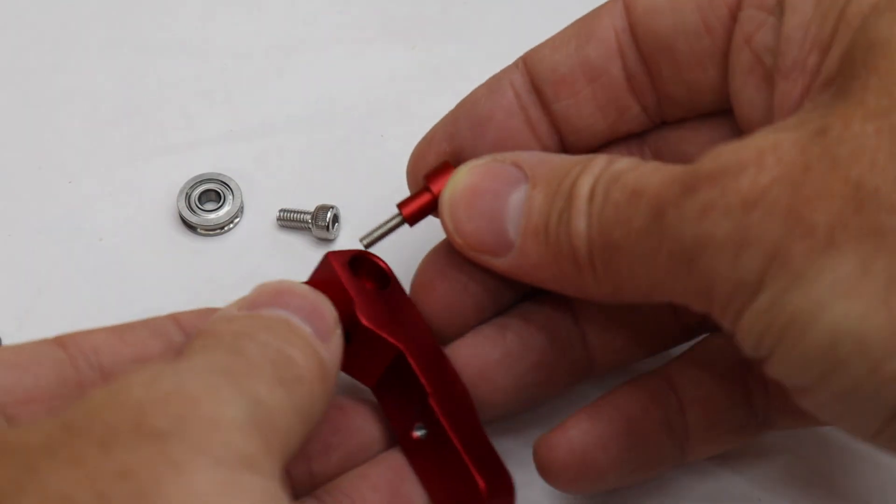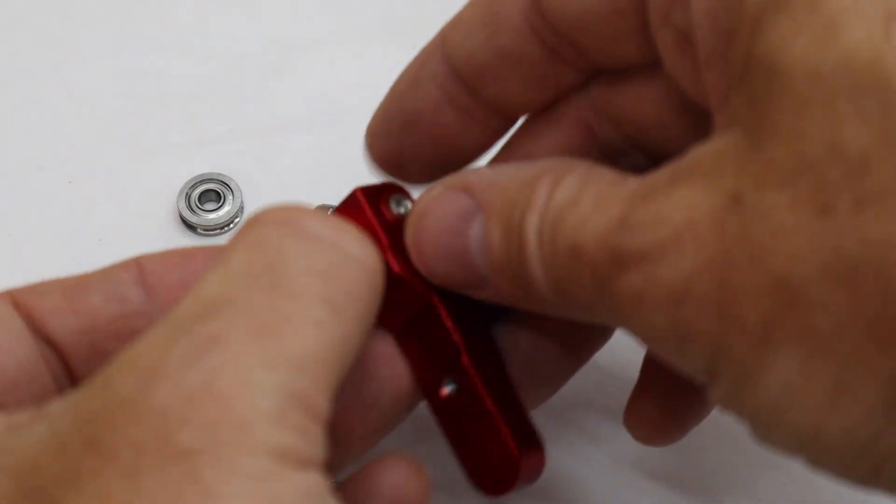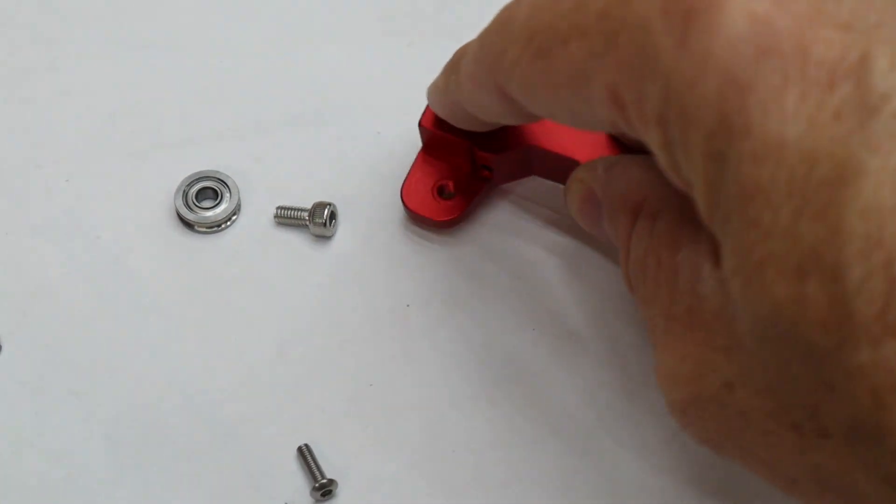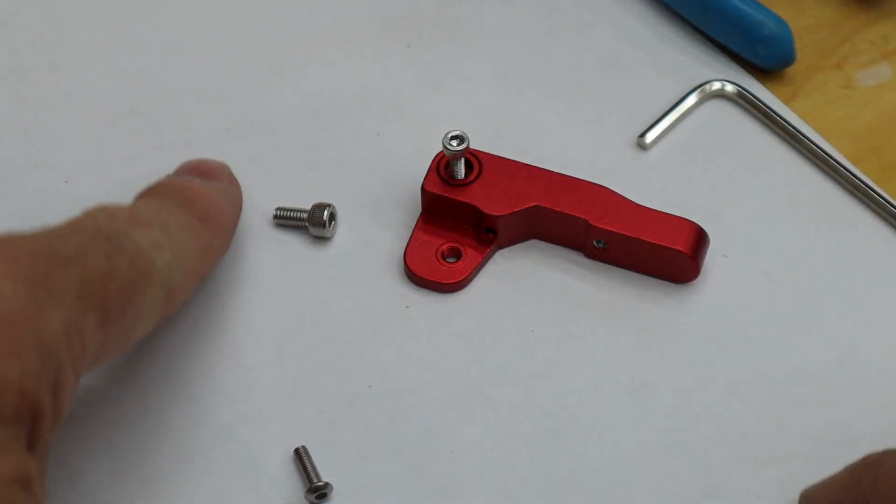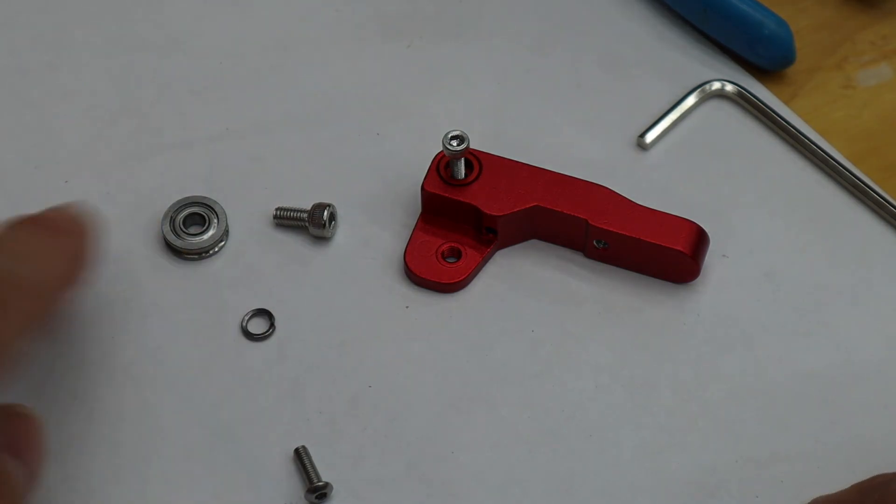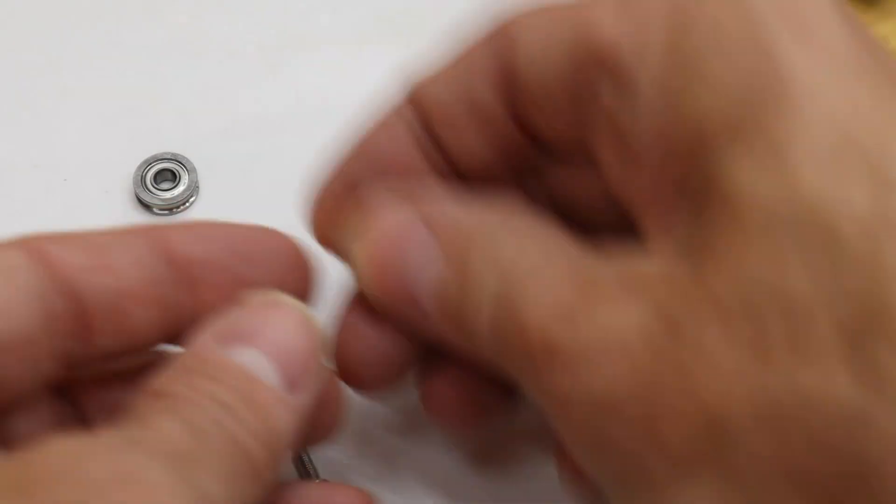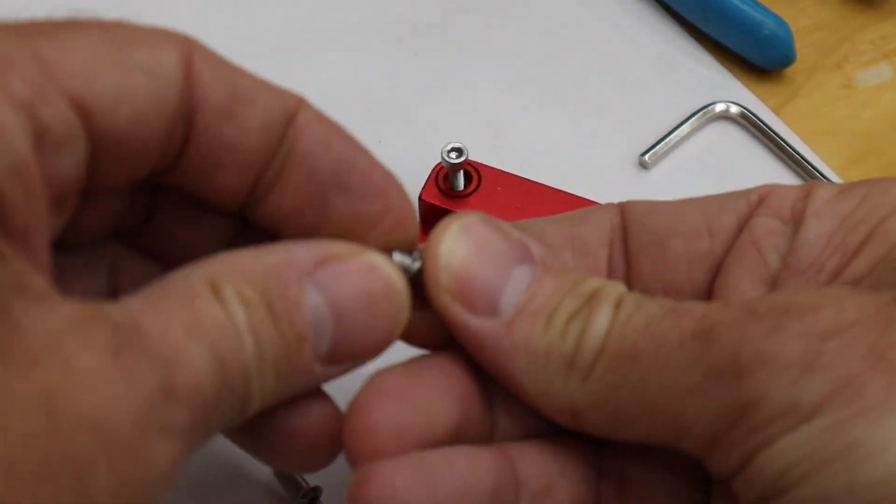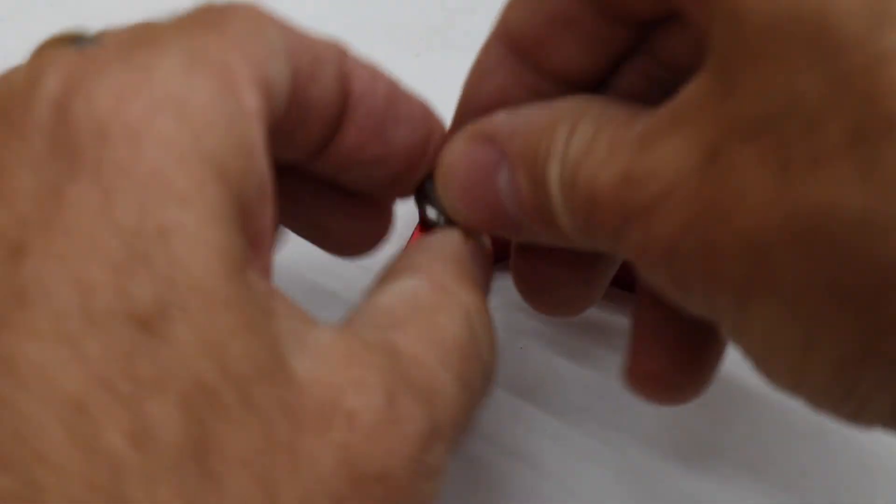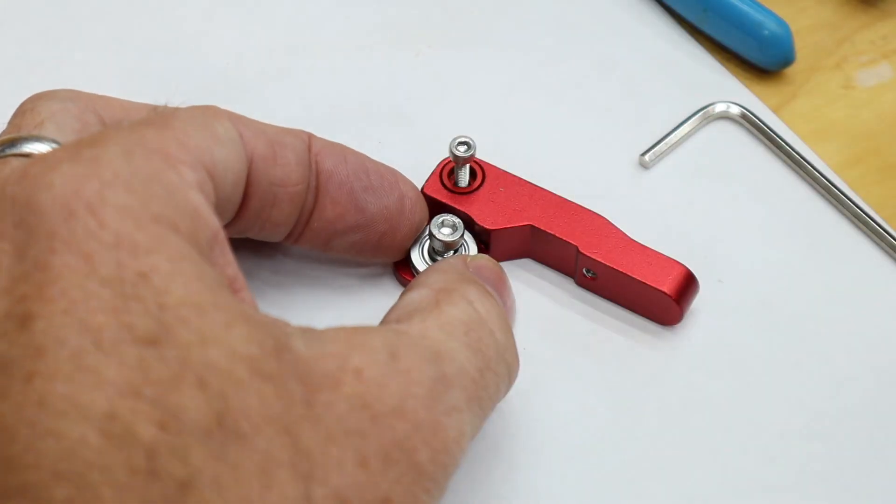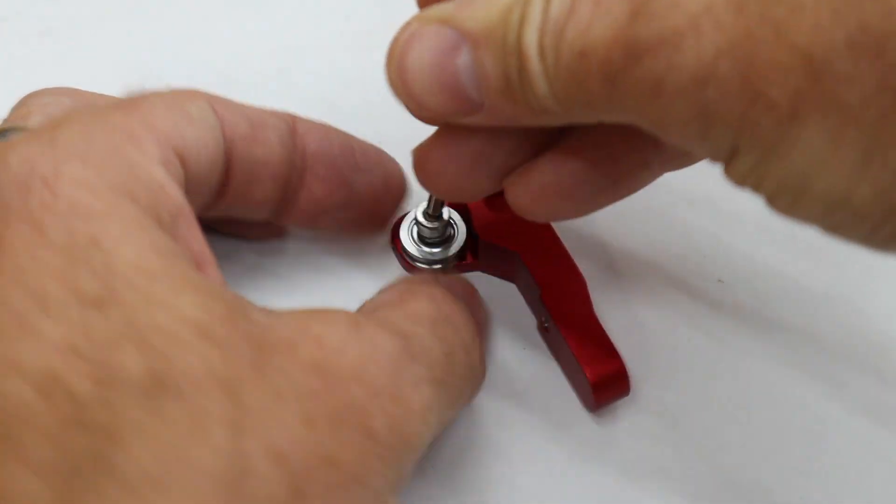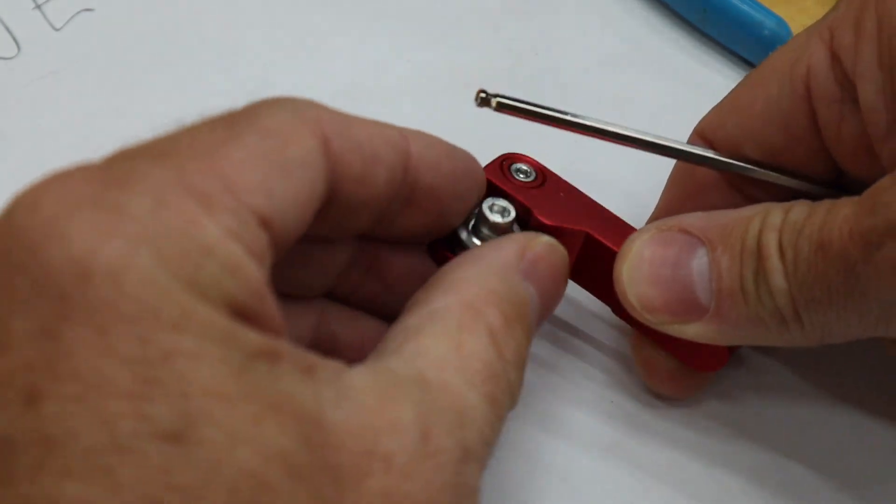So now let's put this arm together. Notice it has this little red collar that slips in there and that is the longer screw that goes in. Just put that there. We need the pulley. We need a little washer and this little screw. Put the washer on. Put the pulley on. Put it into place here.